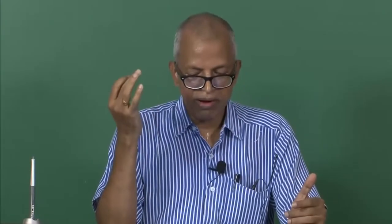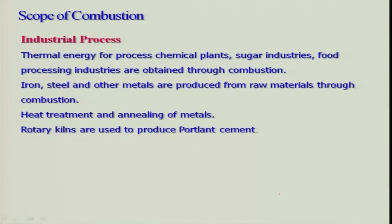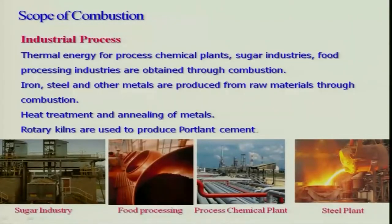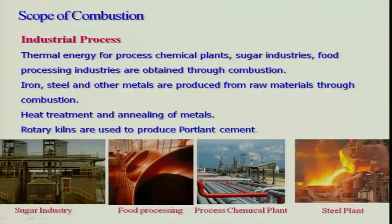Heat treatments, annealing of metals, and even cement — Portland cement is basically made using the rotary kiln. I am against Portland cement because it is spoiling the environment. The best way of making a house is with lime. We are part of the industrial revolution which started around 1760 and we are still continuing. This industrial revolution really spoiled India to a large extent because we lost our indigenous technologies.